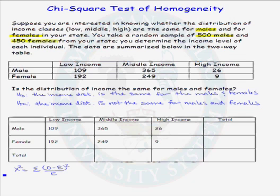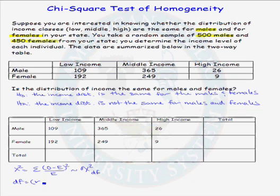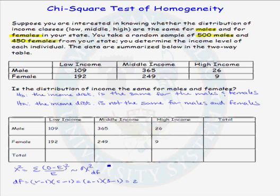We are ready for our test statistic. We will have a chi-squared test statistic, and under certain conditions — which we will check in a minute — this chi-squared test statistic will have a chi-squared distribution with a certain number of degrees of freedom. The degrees of freedom equal the number of rows minus 1 times the number of columns minus 1. We have 2 rows and 3 columns, so degrees of freedom = (2−1)×(3−1) = 1×2 = 2.